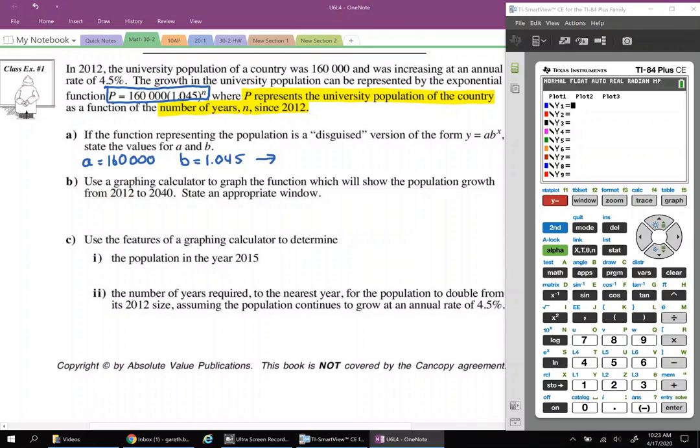Now something that's important to note is where the b value came from because eventually you guys are going to have to build your own equations. Now it says that it is growing at an annual rate of 4.5%. So where the b value comes from is 1 plus 0.045. The b value does not equal just 0.045. If we said that our b value was equal to 0.045, well then that b value falls between 0 and 1 and it would represent a decreasing function. This isn't decreasing, it says in the question that it's increasing. So we'll have to add 1 to that number just to show growth.